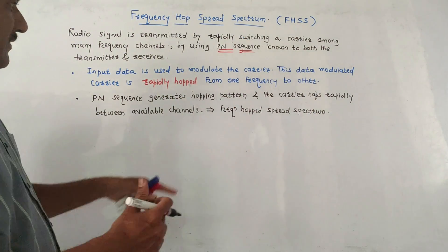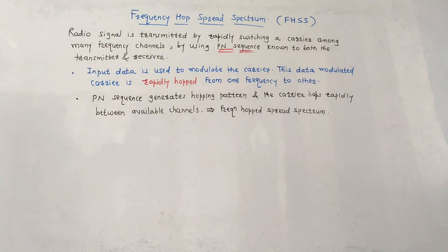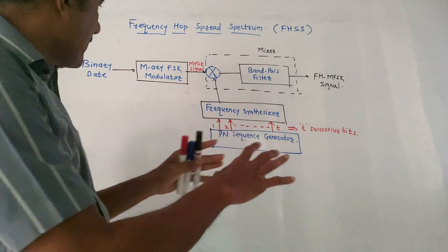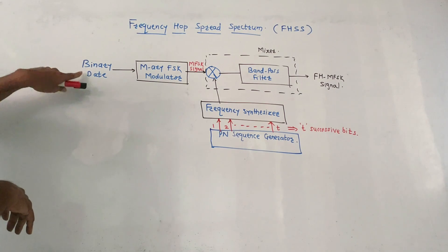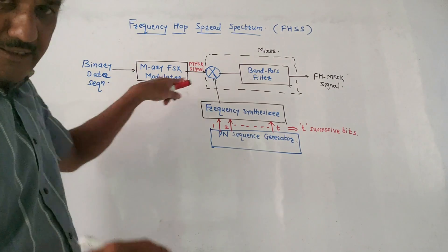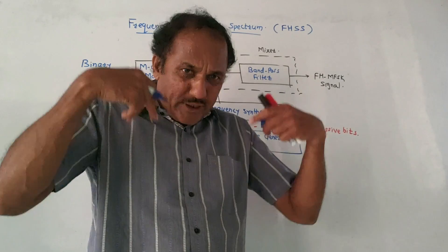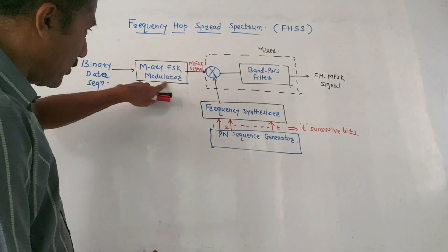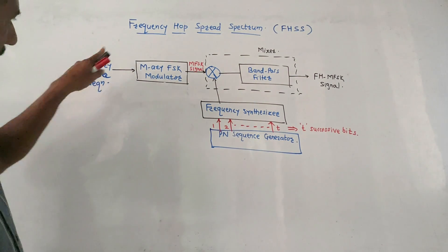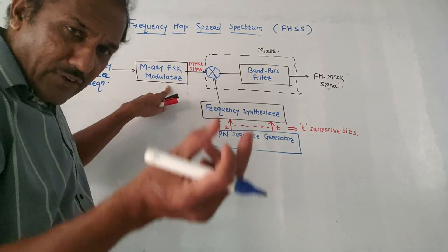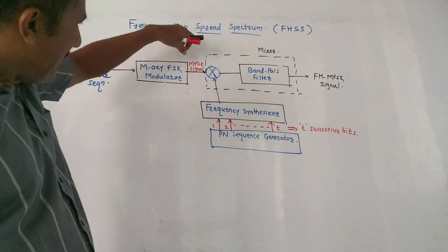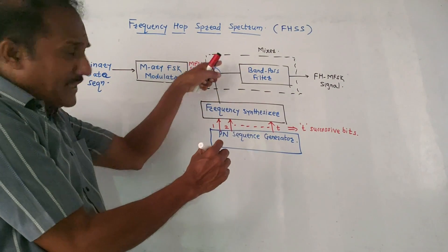This is called Frequency Hopped Spread Spectrum. Now let us look at the block diagram of the transmitter of FHSS. At the input, we apply a binary data sequence. This binary data sequence is first applied to an MFSK modulator. Depending on the input bit of the binary data sequence, one particular output value from MFSK will be selected, producing an MFSK signal.